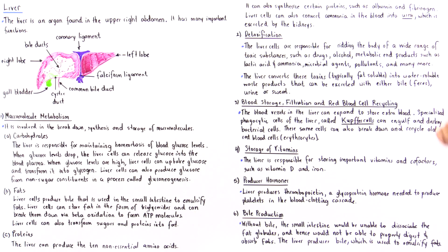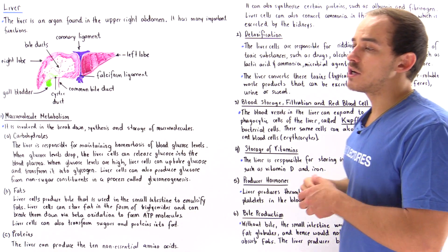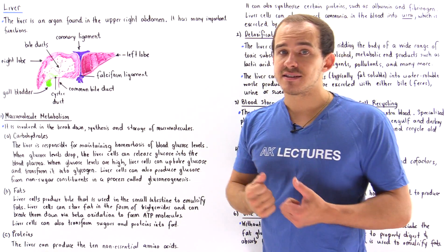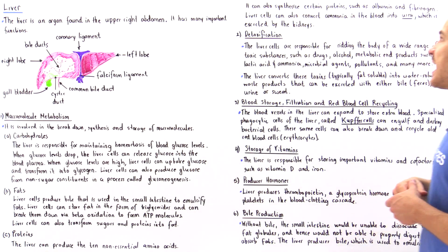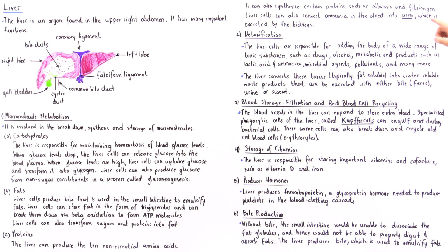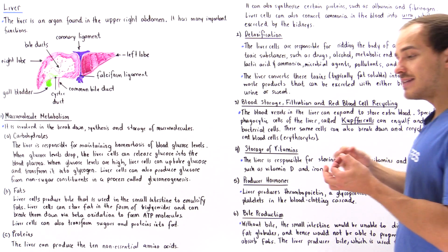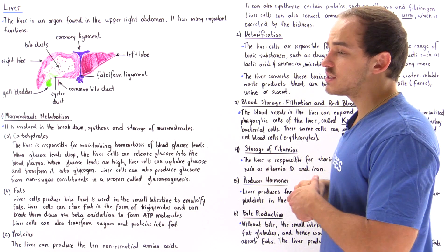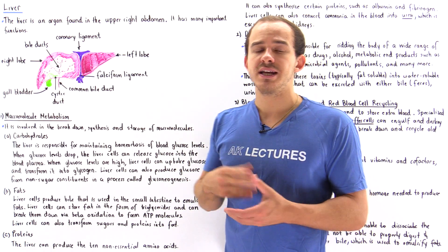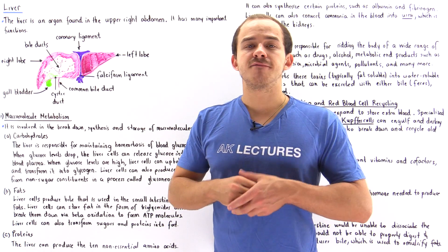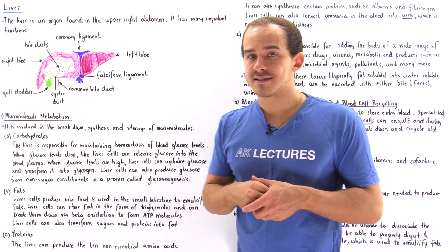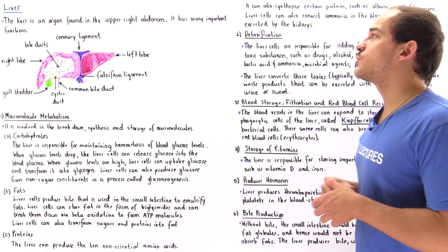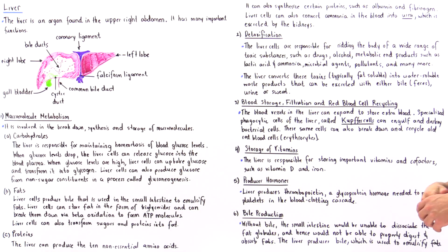Albumin is the protein carrier of fatty acids in the blood plasma, while fibrinogen is an important protein involved in the blood clotting cascade, as we'll see in a future lecture.